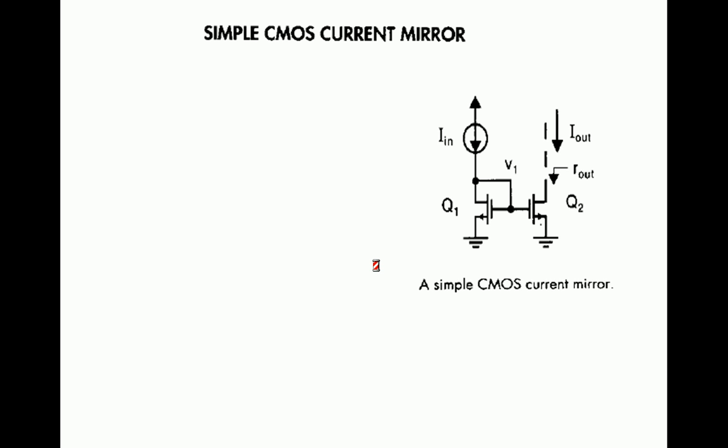Now, the simple current mirror. This is a circuit diagram for a simple CMOS current mirror, where there are two transistors Q1 and Q2. Q1 is a diode-connected MOSFET, meaning its gate and drain are shorted. A transistor with its gate and drain shorted is normally referred to as a diode-connected transistor. A reference current i-in flows into Q1, and Q2 is connected with the same VGS as Q1.